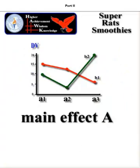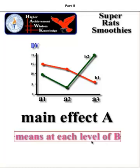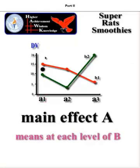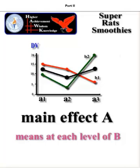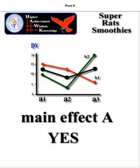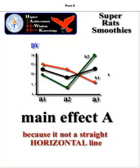Now we're going to check the main effect of A — in other words, was there a significant change just from getting 0, 10, or 20 milligrams? How we do that is we take the average of A at each level of B. There's A1 going up and down — the average between 15 and 10 is roughly 12.5. We do that at A2 and A3 as well. We connect those averages to make a line. This tells us there is a main effect of A, because this is not a straight horizontal line. If it were a flat horizontal line, that would mean there was no change. So yes, we do have a main effect of A.